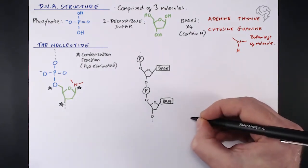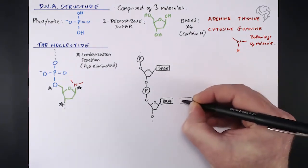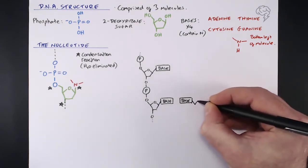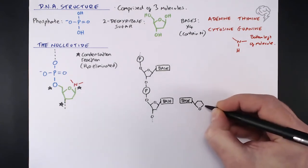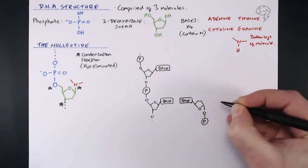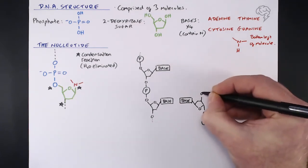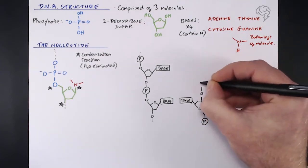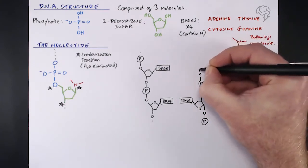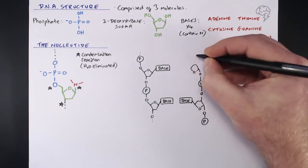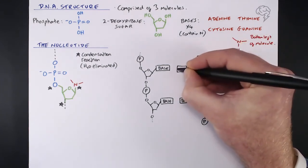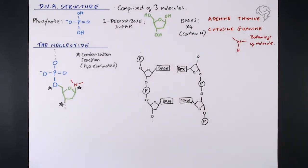On the right hand side I'm drawing the same thing but upside down, because we have another backbone of phosphate and sugars running parallel to the one on the left but in the opposite direction — they run antiparallel. That's because we need these base pairs next to each other. So we've got two backbones, one on each side, and those bases jut out into the middle between the two strands.